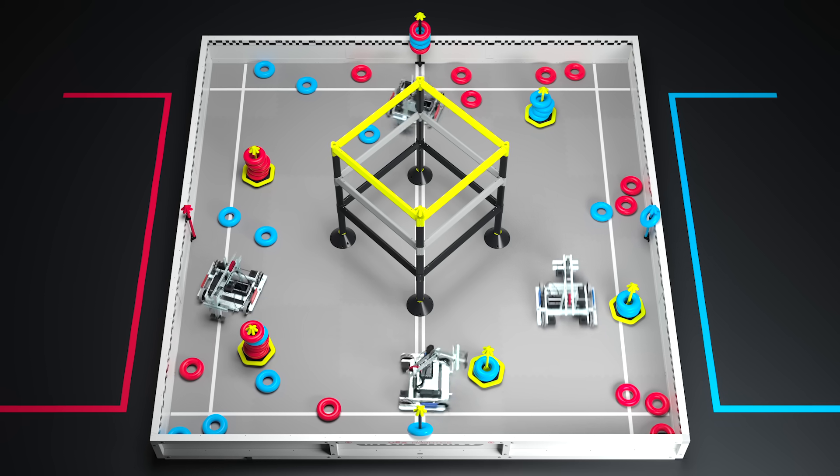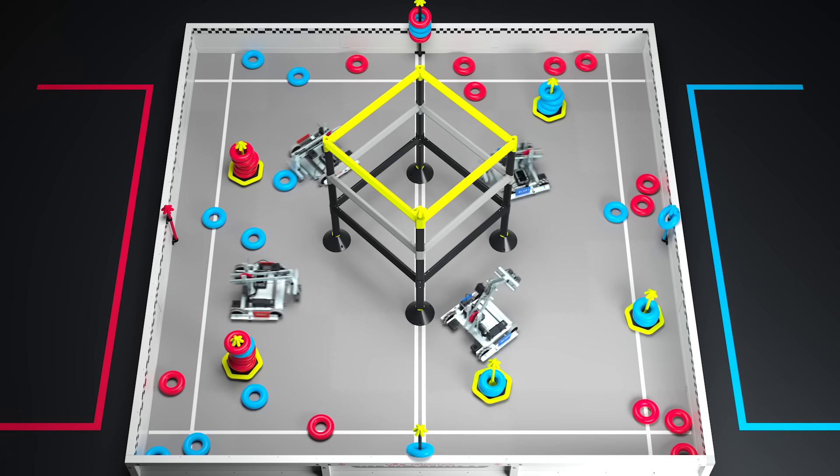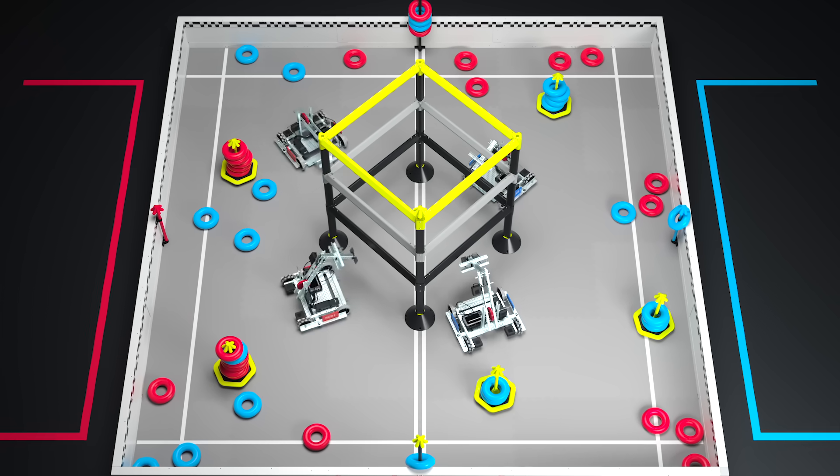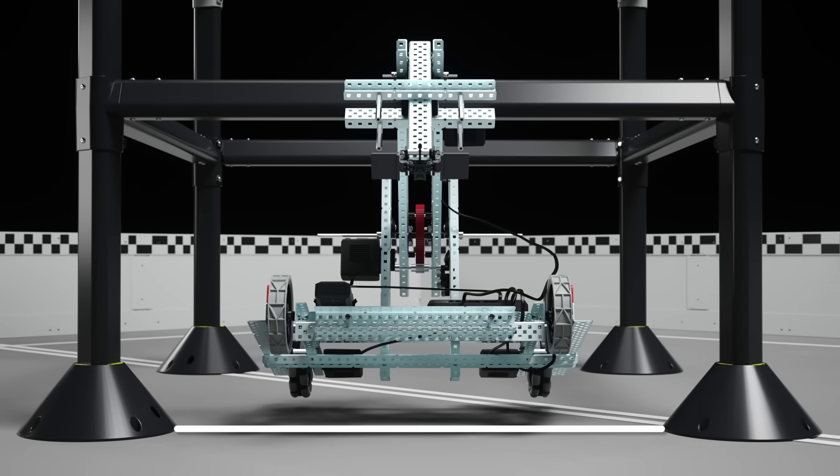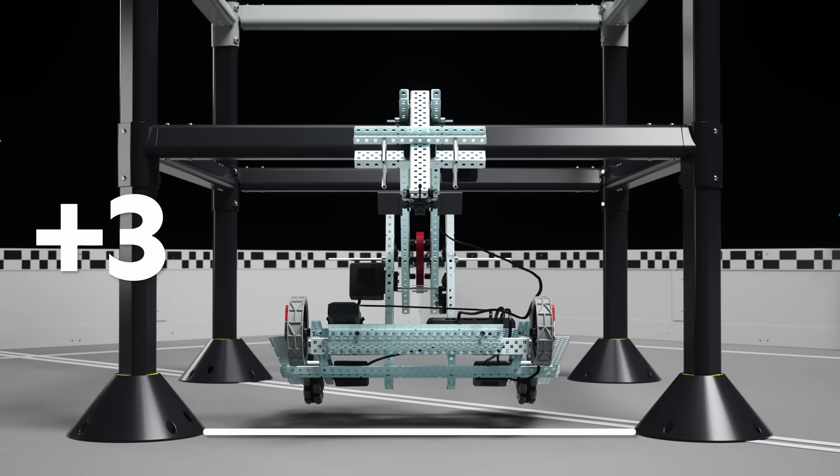At the end of the match, robots can earn additional points by climbing the four-foot-tall ladder. Using the first bar of the ladder to get your robot off the ground is considered a level one climb and is worth three points.